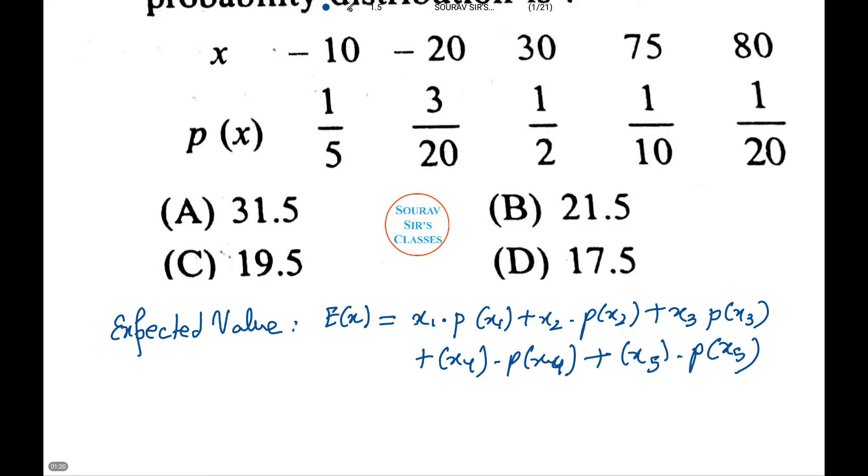This equals minus 10 into 1 by 5 plus minus 20 into 3 by 20 plus 30 into half plus 75 into 1 by 10 plus 80 into 1 by 20.